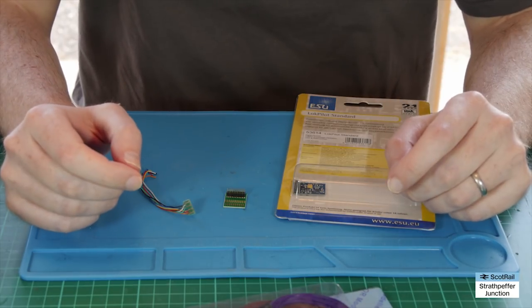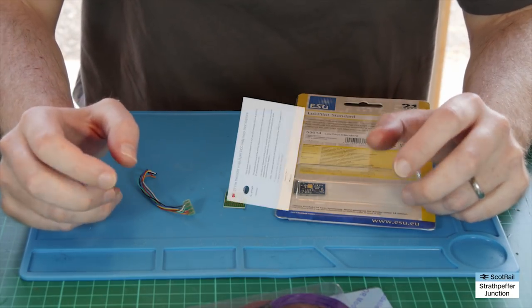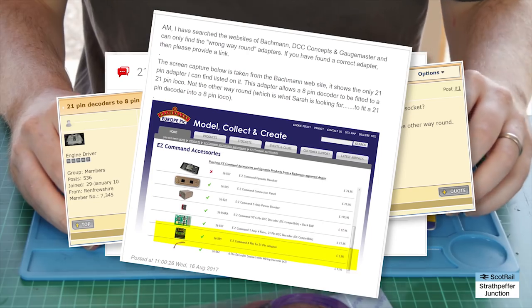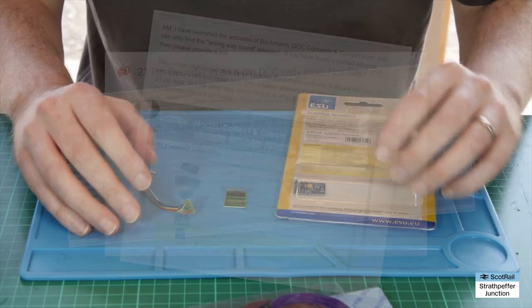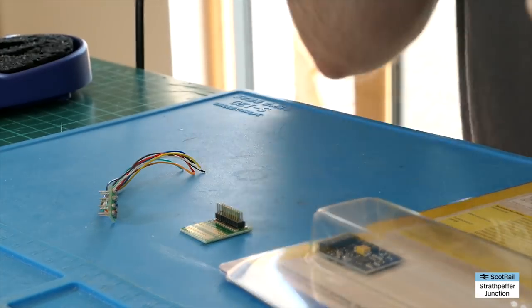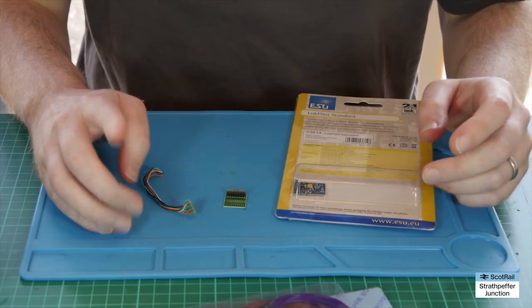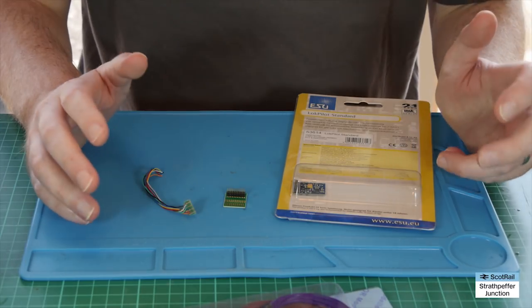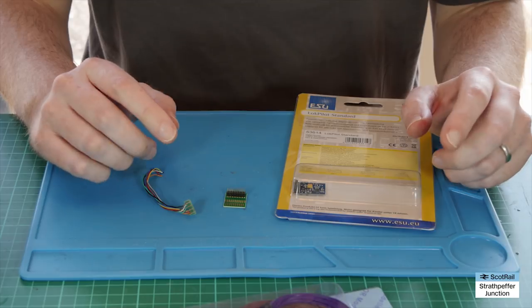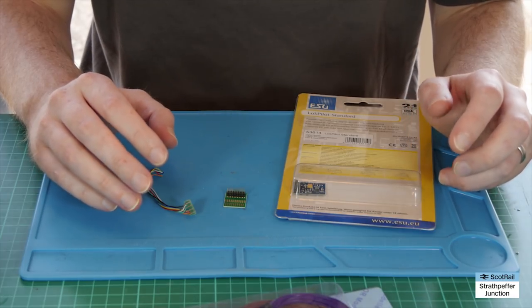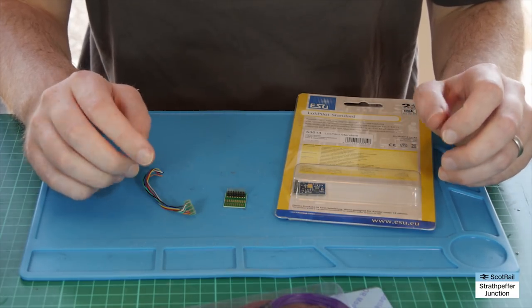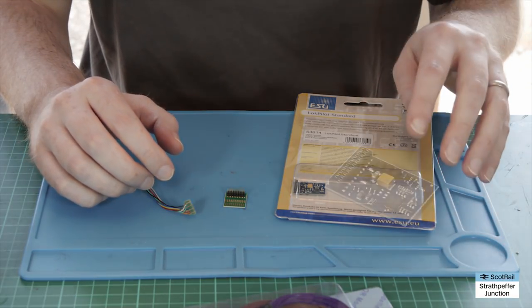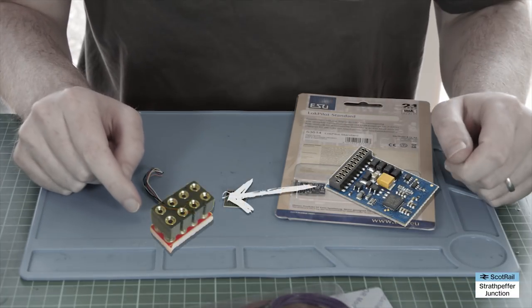One thing I've seen crop up recently on various forums about DCC is we've got various methods of using an 8-pin plug in a 21-pin chassis, and I've done videos on creating adapters for that. You can buy stock adapters too. But one thing that doesn't seem to be covered much, and there aren't obvious adapters to buy, is a mechanism that will allow you to use a 21-pin chip in an 8-pin locomotive chassis.